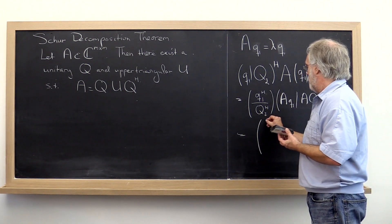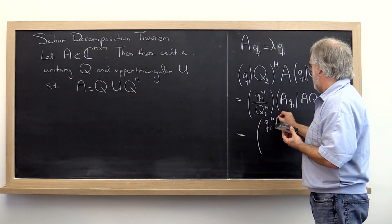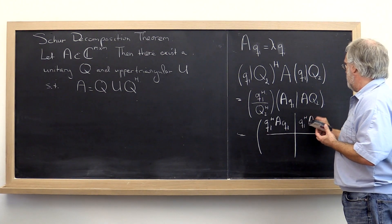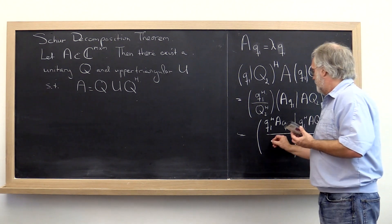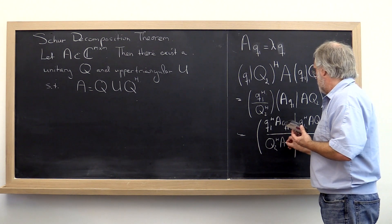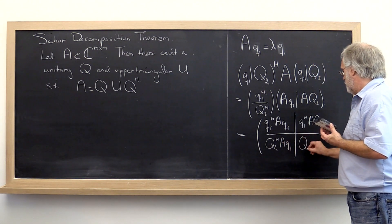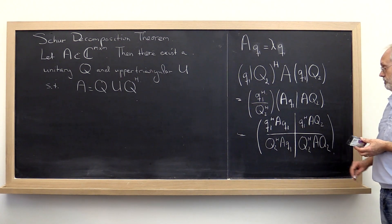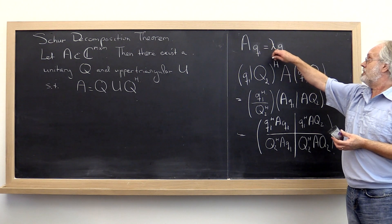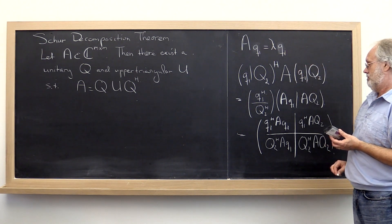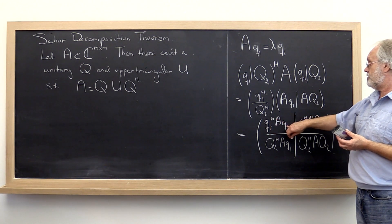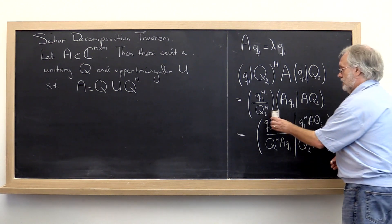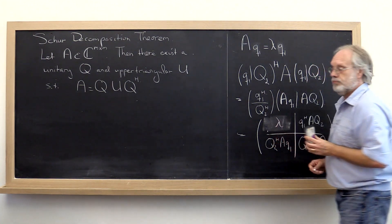And therefore this is equal to q1 Hermitian transpose A q1, q1 Hermitian transpose A q2, q2 Hermitian transpose A q1, and q2 Hermitian A q2. Now A times q1, q1 is just lambda times q1. And q1 Hermitian transpose times q1, the dot product of q1 with itself is just the square of its length. But its length we chose to be 1, so this here becomes lambda.